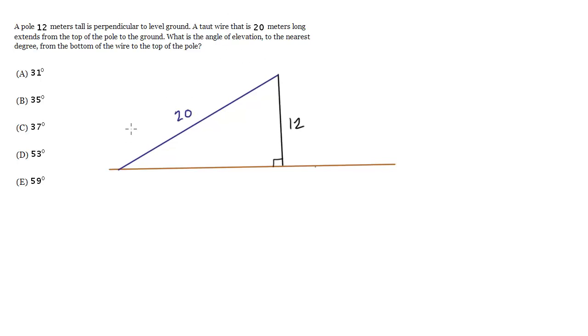From the top of the pole to the ground, what is the angle of elevation to the nearest degree from the bottom of the wire to the top of the pole? So we're looking for this angle right here.